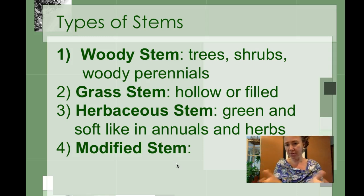Grass stems, which are typically hollow if you've ever bitten into grass and notice there's space in the center. Herbaceous stems, which would be basically any annual or perennial that's got a soft instead of a woody stem, a soft green stem. And then there's also modified stems, which we'll talk about in just a minute.